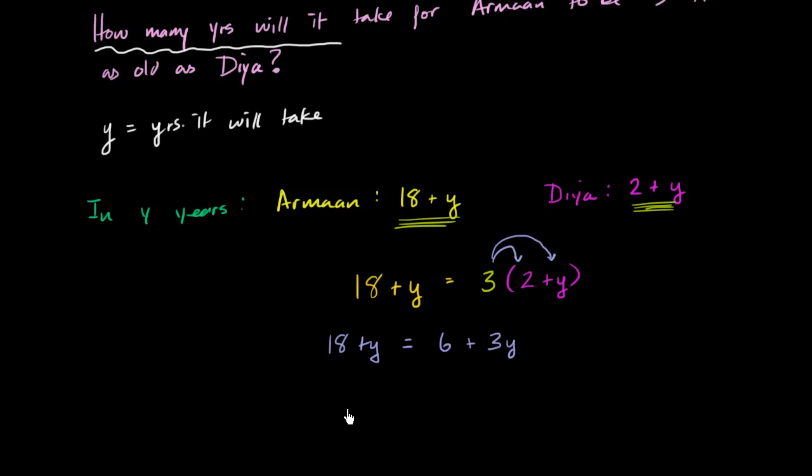And then it's always nice to get all of our constants on one side of the equation, all of our variables on the other side of the equation. So we have a three y over here. We have more y's on the right-hand side than the left-hand side. So let's get rid of the y's on the left-hand side. You could do it either way, but you'd end up with negative numbers. So let's subtract a y from each side.